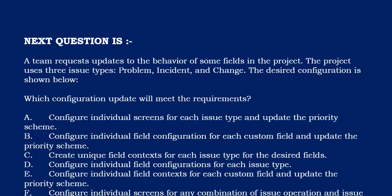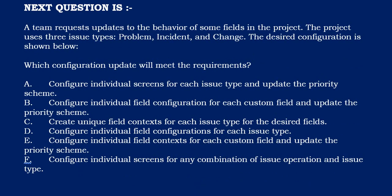Which configuration update will meet these requirements? Option A: configure individual screens for each issue type and update the priority scheme. Option B: configure individual field configuration for each custom field and update the priority scheme. Option C: create unique field context for each issue type for the desired field. Option D: configure individual field configuration for each issue type. Option E: configure individual field context for each custom field and update the priority scheme. Option F: configure individual screen for any combination of issue operation and issue type.